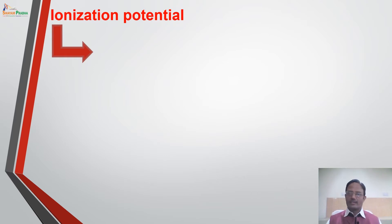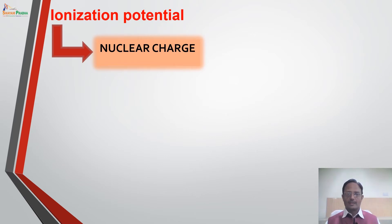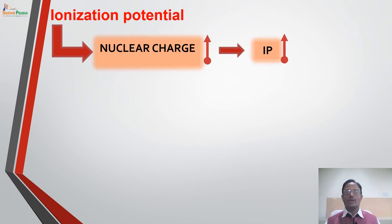There are a few factors which govern ionization potentials. The first factor is nuclear charge. If the nuclear charge is more or nuclear charge is increased, then the force of attraction between nucleus and the outermost electron will increase. So if we want to remove that electron, we will have to supply more energy. In other words, with increase in nuclear charge, the ionization potential goes on increasing — ionization potential is directly proportional to nuclear charge.